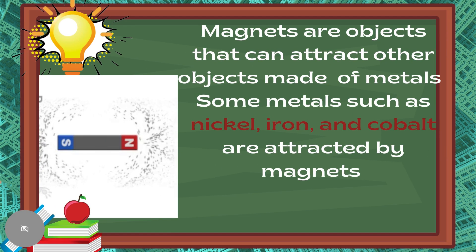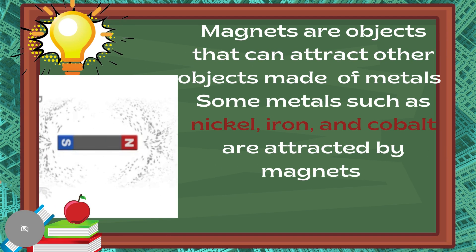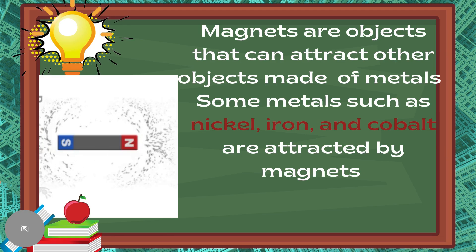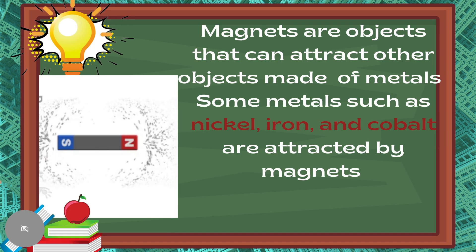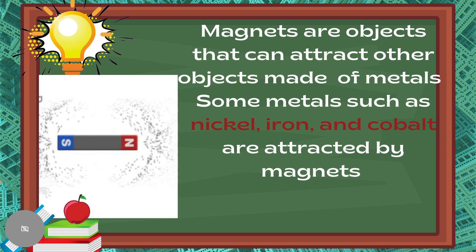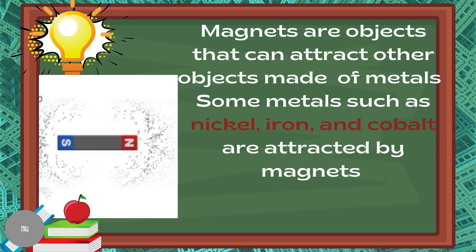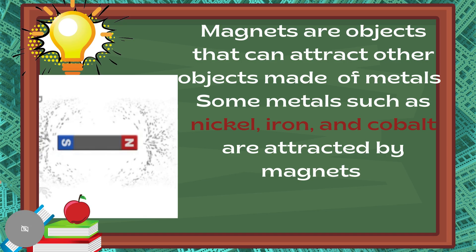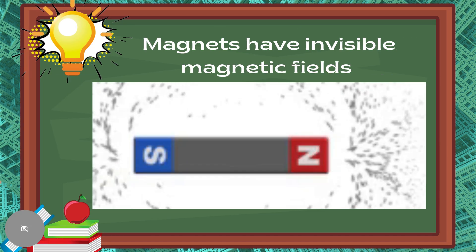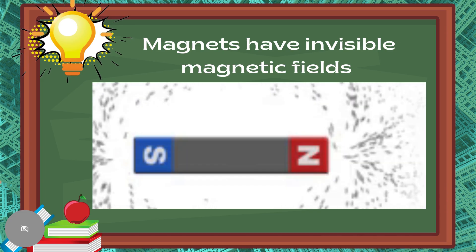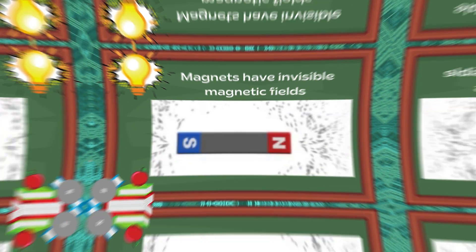Class, you have to remember that magnets are objects that can attract other objects made of metals. Some metals such as nickel, iron, and cobalt are attracted by magnets. Magnets also have invisible magnetic fields.